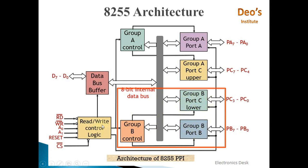The read/write control logic output is connected to all ports — Port A, Port B, Port C upper, and Port C lower. This covers all about the 8255 architecture.